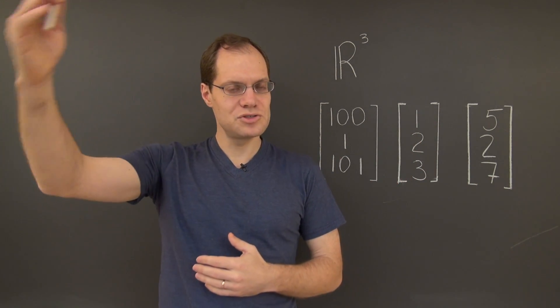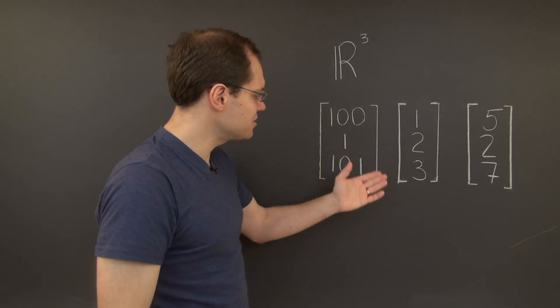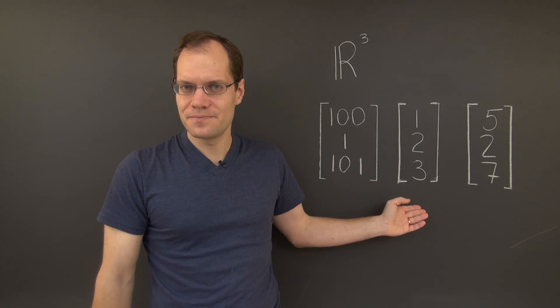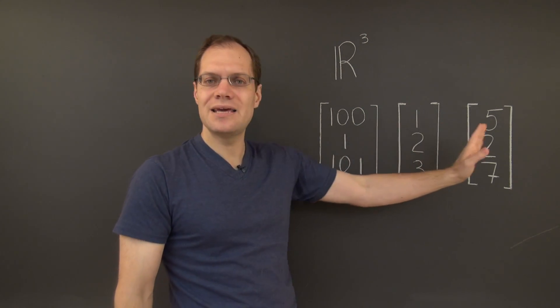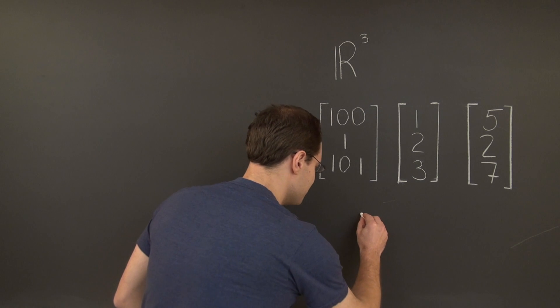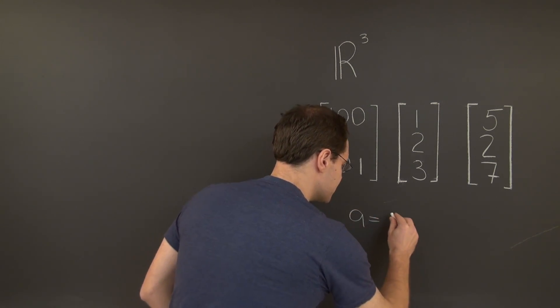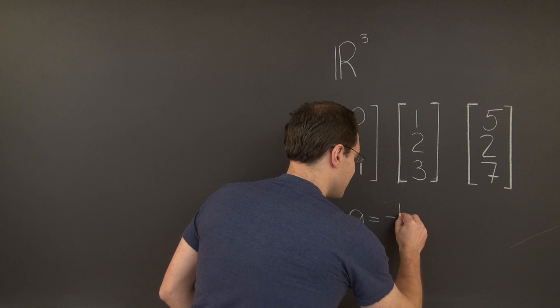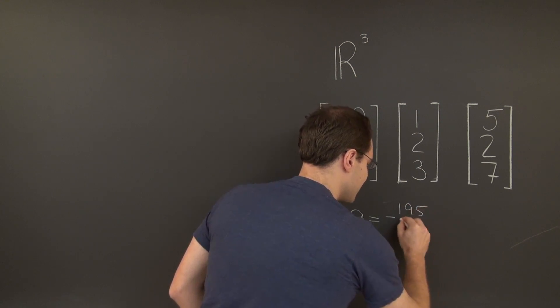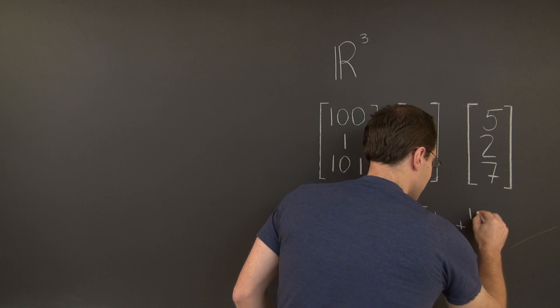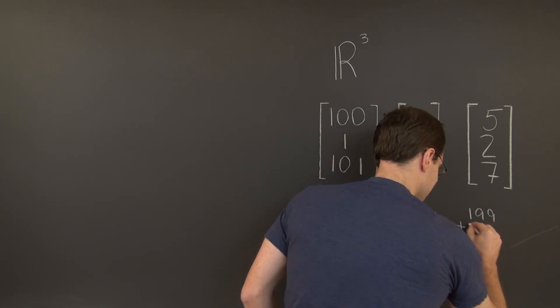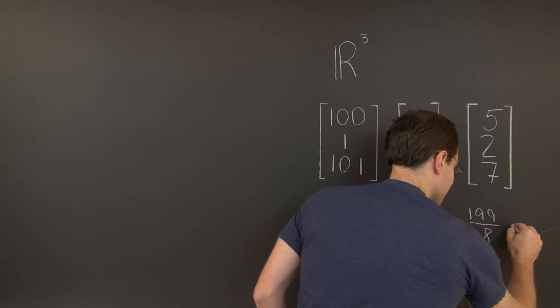Later on, when we introduce Gaussian elimination, we'll actually consider this very problem. And rather easily, to be honest, we'll arrive at the conclusion that, if you call these vectors a, b, and c, that a equals, let's see, minus 195 eighth of b plus 199 eighth of c.